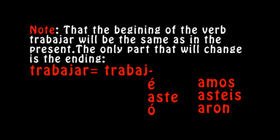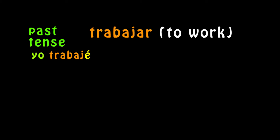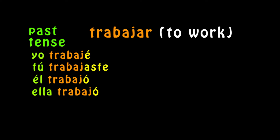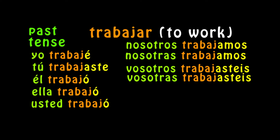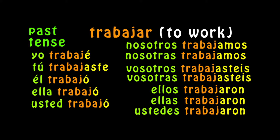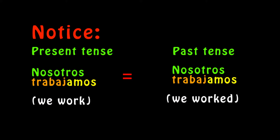The only part that will change is the ending. You take the -AR of trabajar and change it to: -é, -aste, -ó, -amos, -asteis, -aron. So in the preterite: yo trabajé, tú trabajaste, él trabajó, ella trabajó, usted trabajó, nosotros trabajamos, nosotras trabajamos, vosotros trabajasteis, vosotras trabajasteis, ellos trabajaron, ellas trabajaron, ustedes trabajaron. Notice that nosotros trabajamos in the present and past tense is the same — so how do we tell the difference? By context.